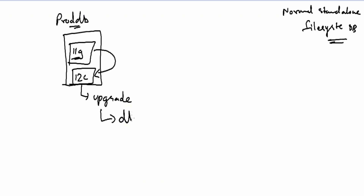Upgrades are of two types: you use DBUA (Database Upgrade Assistant) or manual upgrade. Manual upgrade is a little tedious and takes a lot of effort from a DBA. With DBUA, it's a graphical interface where you input your credentials and the upgrade will be done. The problem with DBUA is if your upgrade fails in between, you cannot use DBUA again — you have to go with the manual method. But issues with DBUA are not that frequent; it is quite comfortable to use.